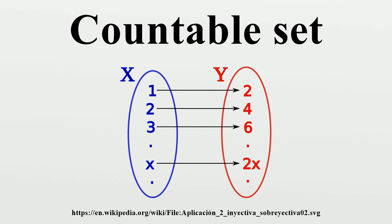If the sets are not disjoint, then the union is even smaller and is therefore also countable by a previous theorem. Also note that we need the axiom of countable choice to index all the sets simultaneously. Theorem: The set of all finite length sequences of natural numbers is countable. This set is the union of the length-one sequences, the length-two sequences, the length-three sequences, each of which is a countable set. So we are talking about a countable union of countable sets, which is countable. Theorem: The set of all finite subsets of the natural numbers is countable.